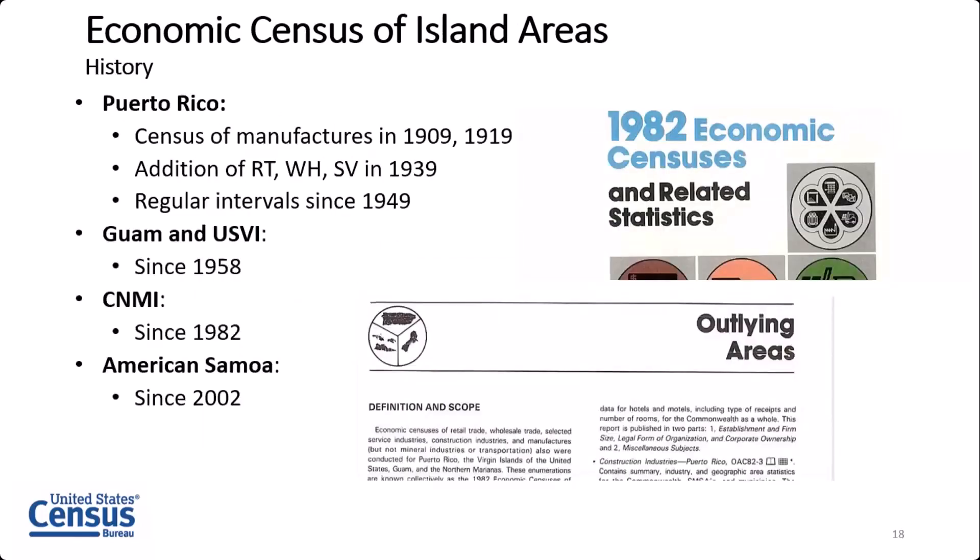A little history of the Economic Census: the Census Bureau has collected statistics on Puerto Rico's economy since soon after it became a territory. There was a census of manufacturers in 1909 and 1919, and then gradually other sectors were added. It has been conducted as part of a regular Economic Census since 1949, tracking the development of the stateside Economic Census. The other four territories have been included and expanded in the latter part of the 20th century.